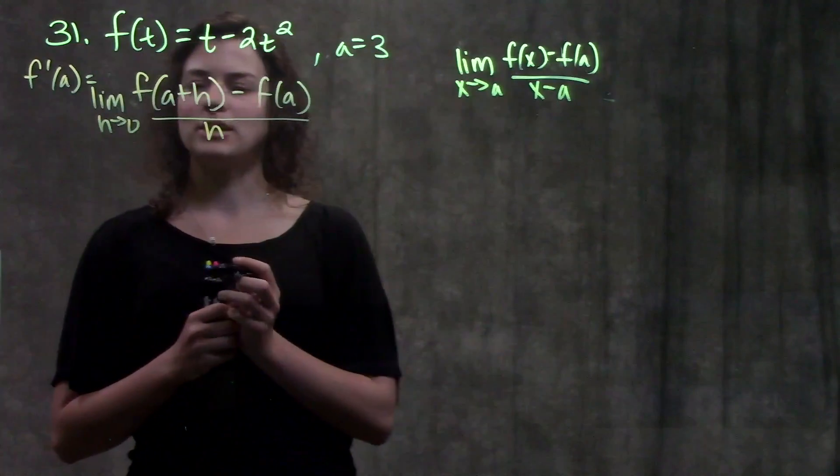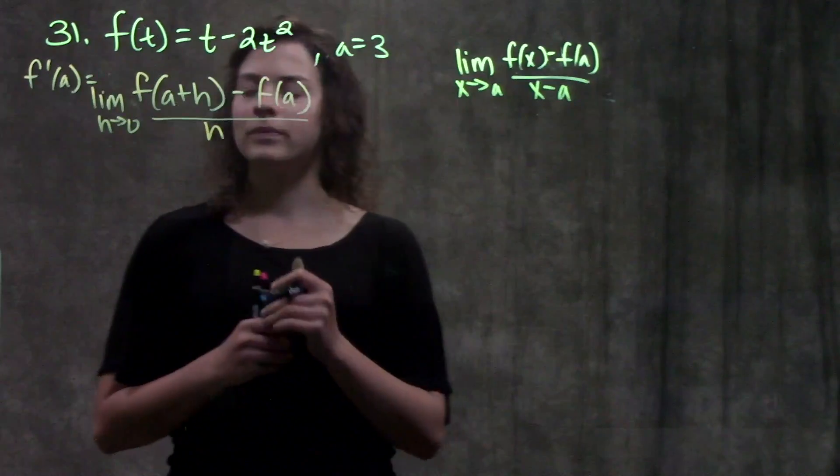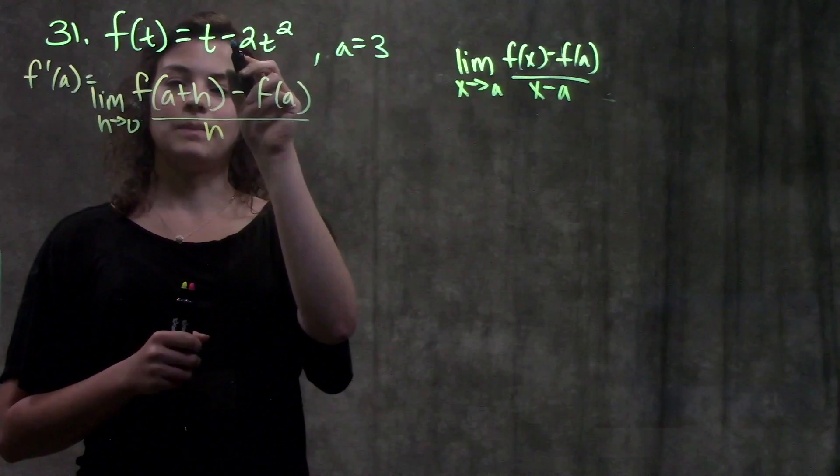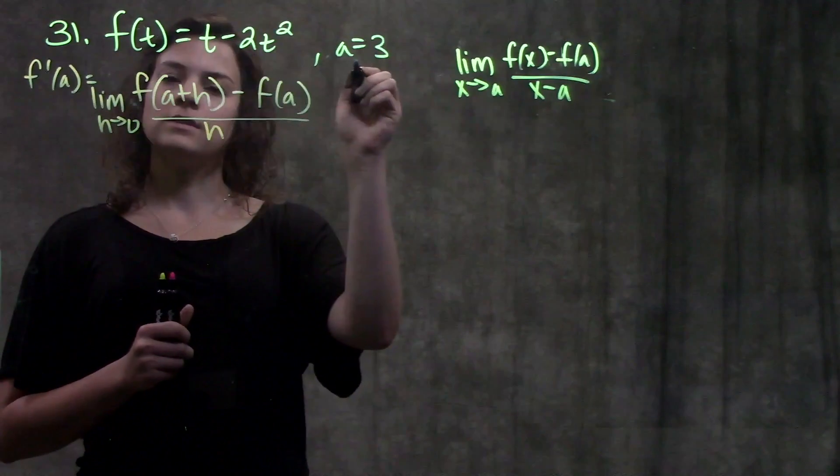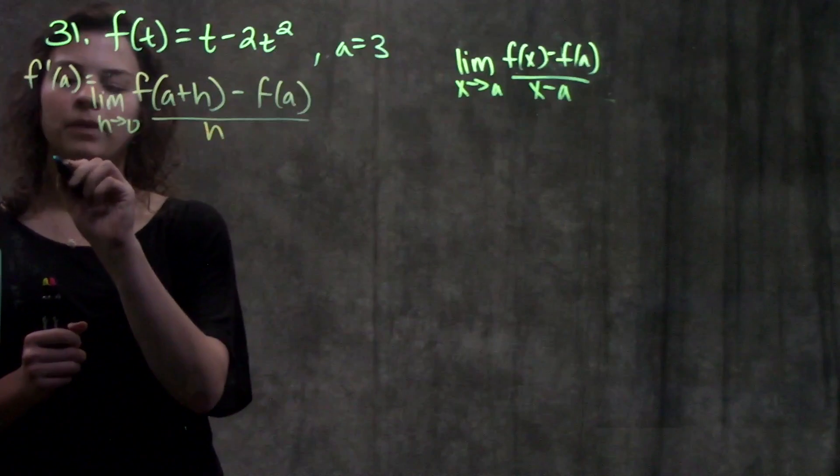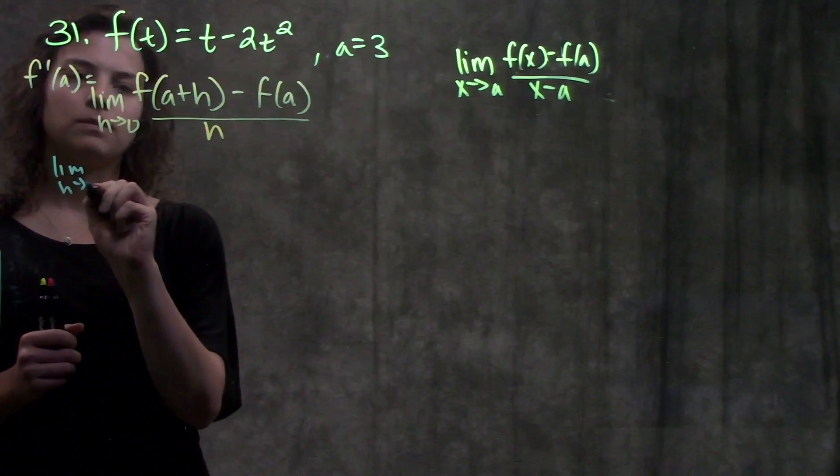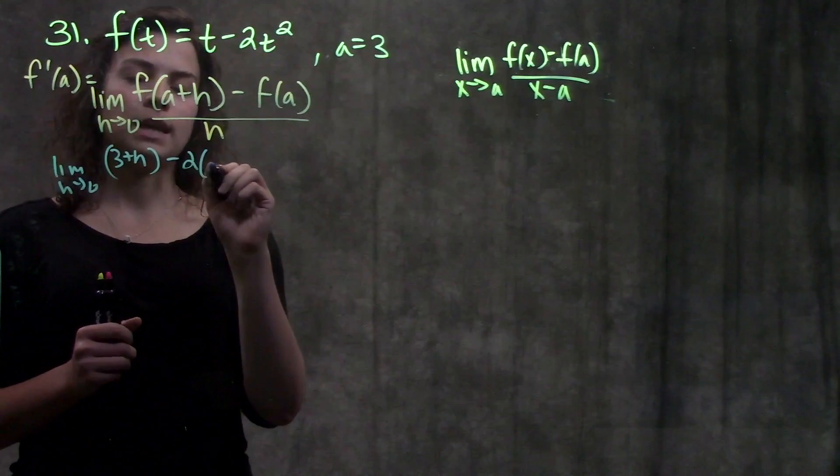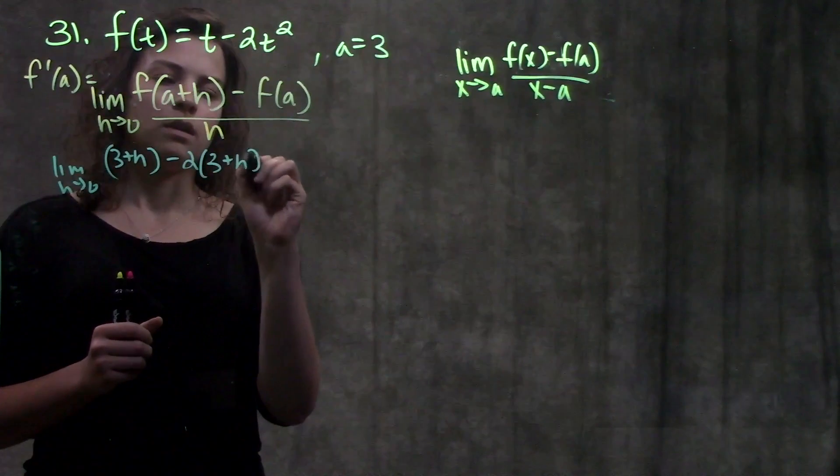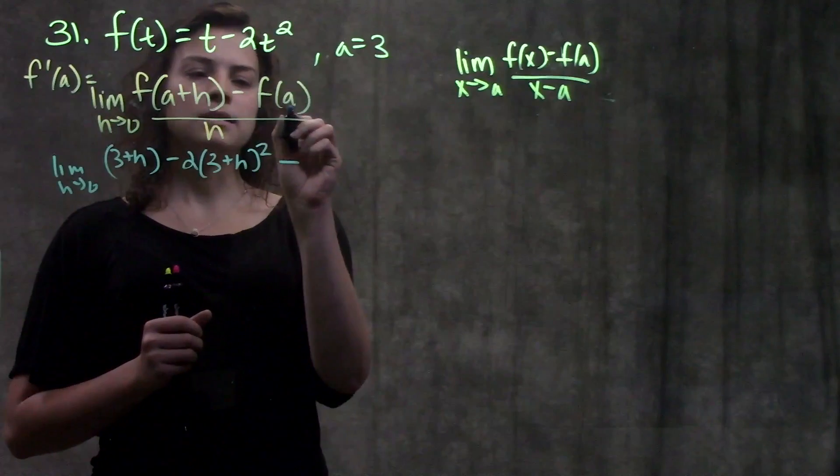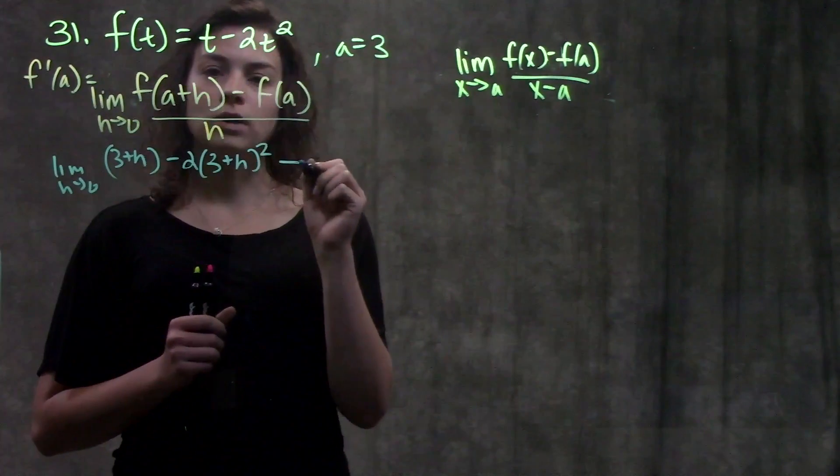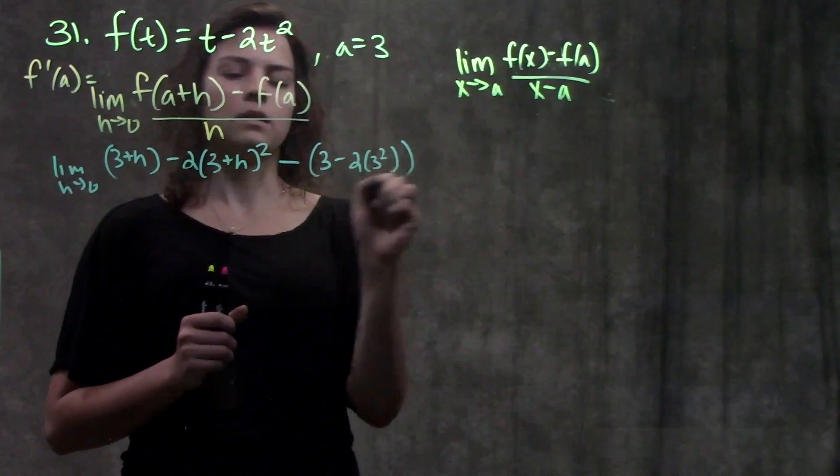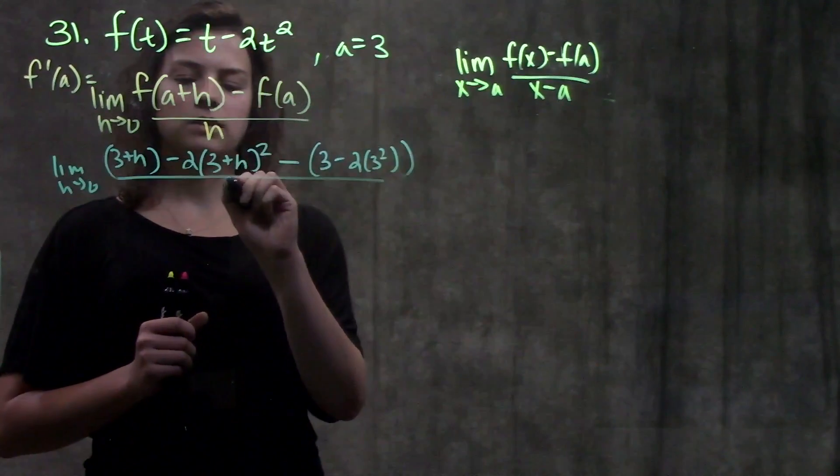Looking at our first definition, limit as h approaches zero. This first part tells me to plug in a plus h wherever I see a t in my original function. But remember, our a in this case is 3, so I plug in 3 plus h wherever I see a t. So that gives me 3 plus h minus 2 times (3 plus h) squared. And now I minus whatever I get when I plug 3 into my function: minus (3 minus 2 times 3 squared). And all that is just over h.